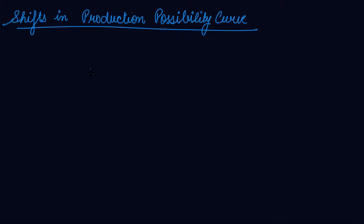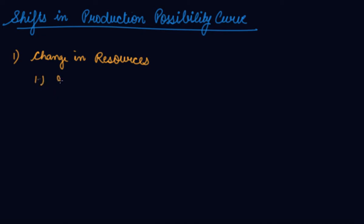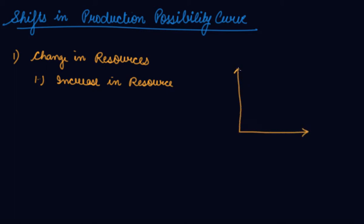Let's look at shifts in the production possibility curve. When your production possibility curve can shift, we have taken the assumption that resources are constant. But if there is a change in resources — number one being an increase in resources — you will be able to increase the production of both good X and good Y.